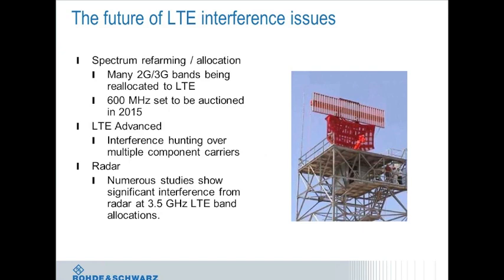One of the main features of LTE Advanced (Release 10) is carrier aggregation — using multiple component carriers to increase bandwidth and throughput. From an interference hunting perspective, this means performance depends on signals in multiple bands, possibly separated by substantial frequency differences. Interference hunters will need to police multiple bands, requiring different antennas and approaches due to different propagation characteristics. Additionally, some radar systems operate near planned 3.5 GHz LTE allocations, and studies show radar is very likely to cause significant interference to nearby LTE networks.